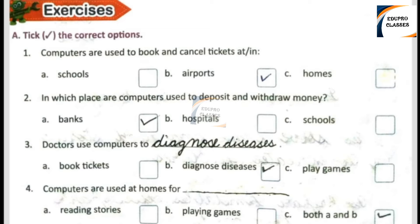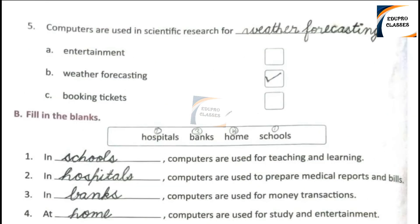Number 4: Computers are used at homes for Option A: reading stories, Option B: playing games, Option C: both A and B. Option C is the right answer — reading stories and playing games.